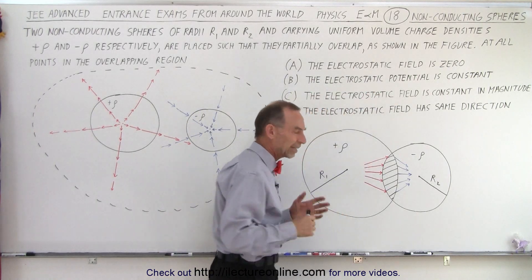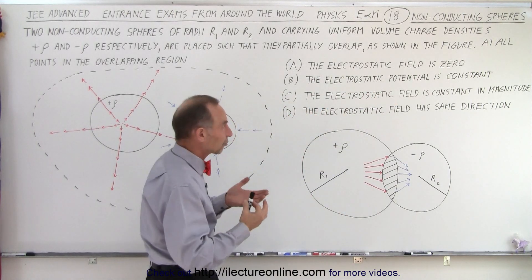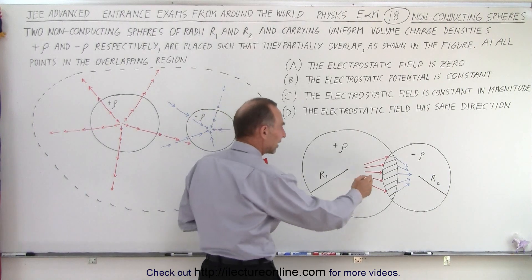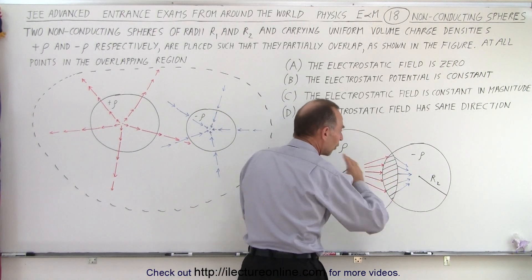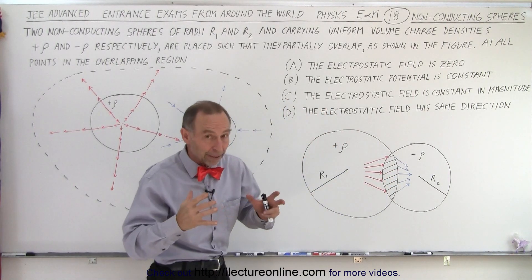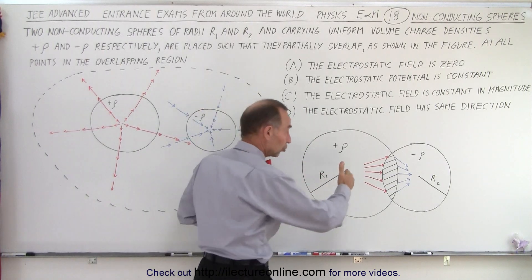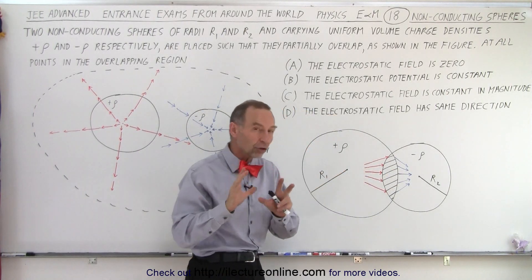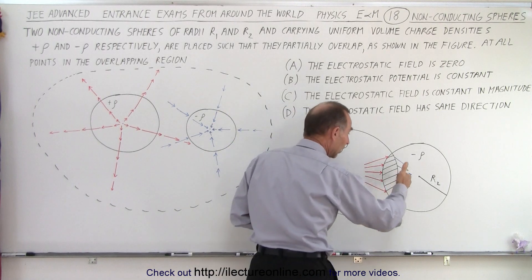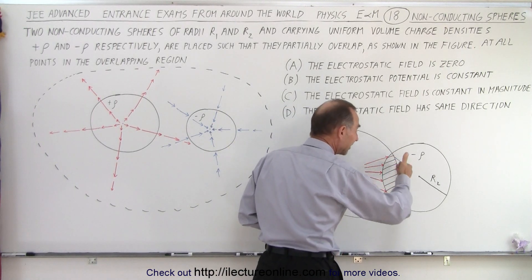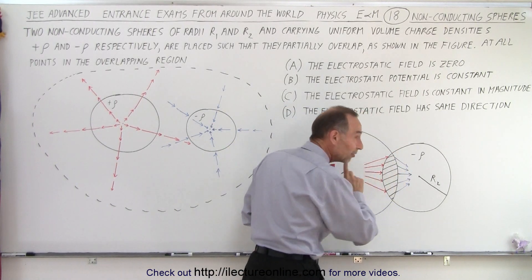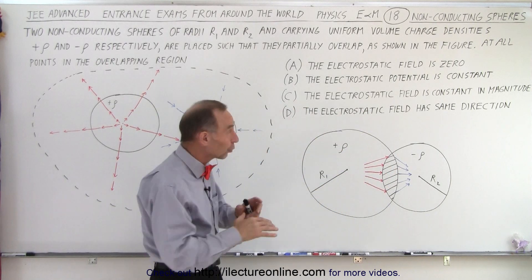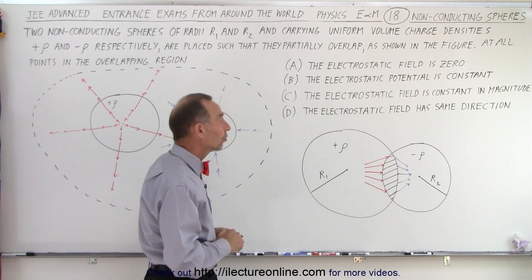The electrostatic field is zero. Electrostatic means the same as the electric field. So is the electric field zero in the overlapping region? Now you might be inclined to say yes, of course, because the charges cancel out. Well, yes, the charges cancel out. So essentially, there's no charge density there. But that doesn't mean that the electric field or the electrostatic field goes to zero in there.